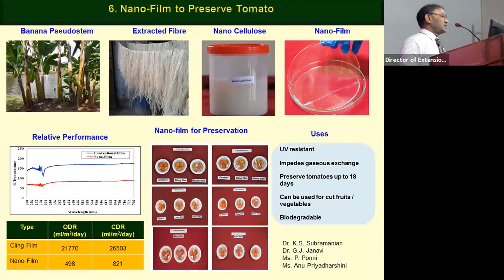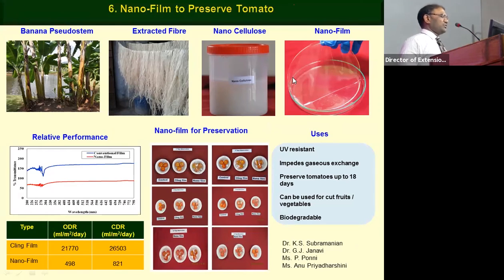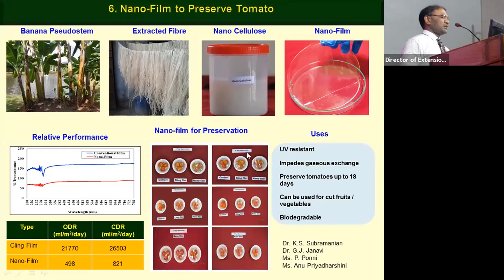The last post-harvest technology is nano-fiber film extracted from the banana pseudo-stem. After banana fruit is harvested, the pseudo-stem — about 80 tons per hectare — remains. Near our university in Thondamuthur, we extract the fiber, convert it into nano-cellulose, and make a film that can cover fruits and vegetables like a wrap. This bio-film is 100 percent biodegradable, degrading within three to four weeks. When tomato fruits are covered with this film, they are preserved for 18 days without loss.